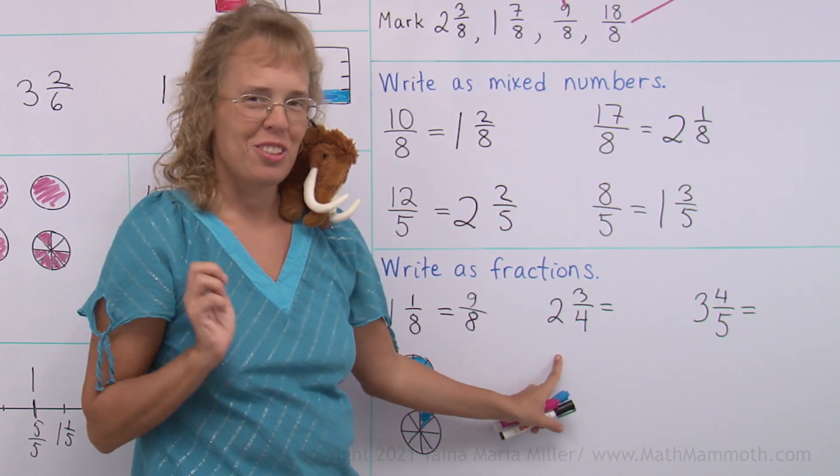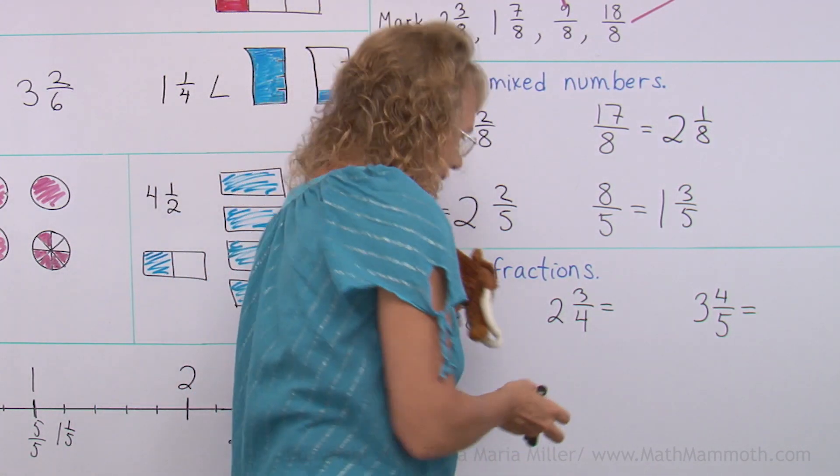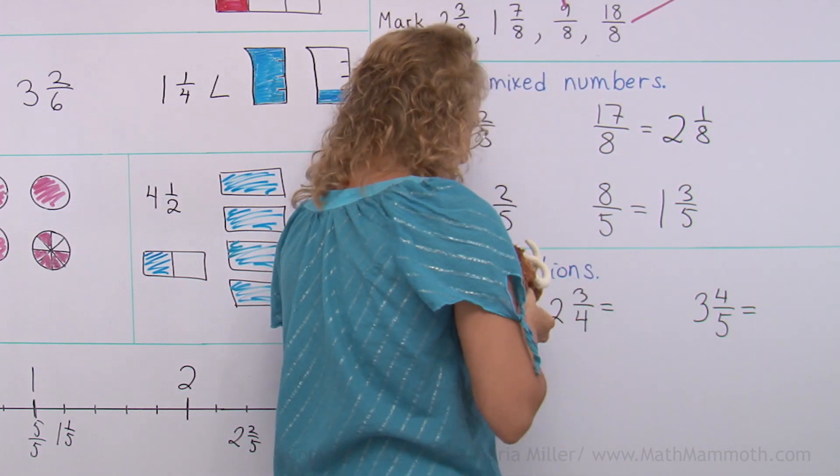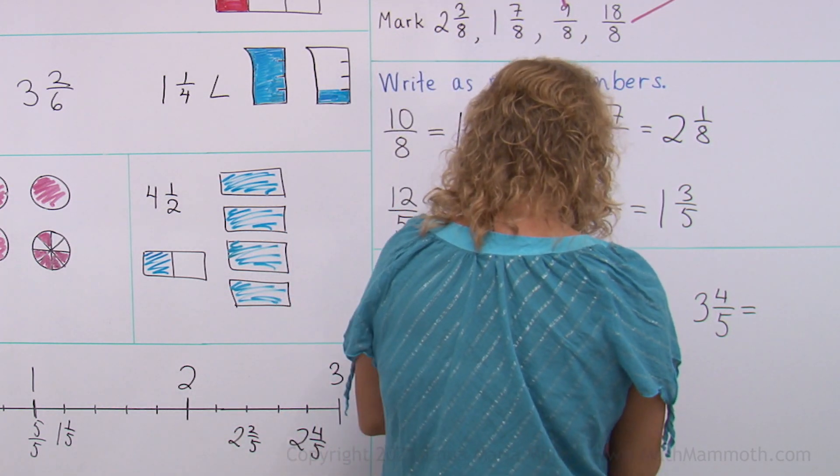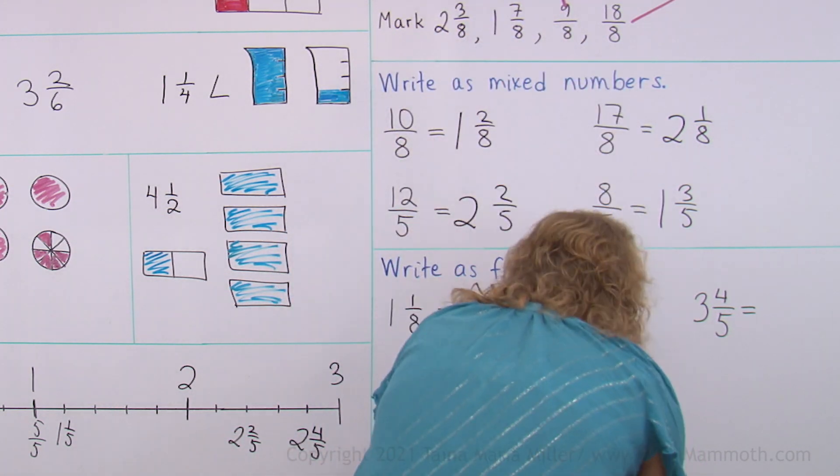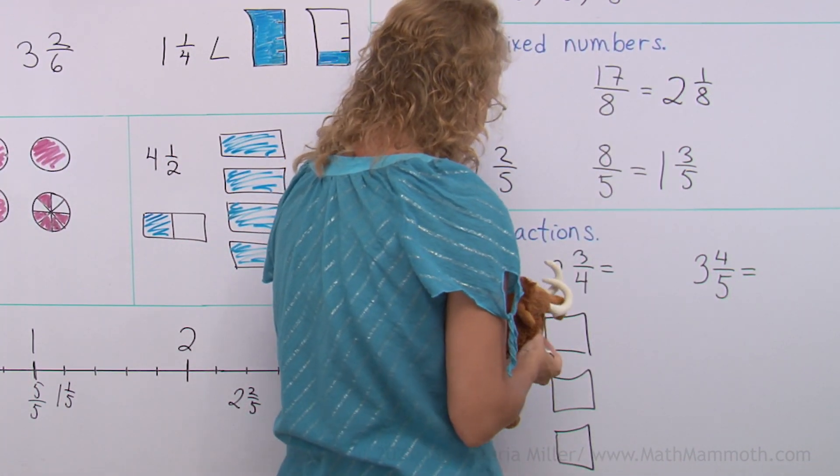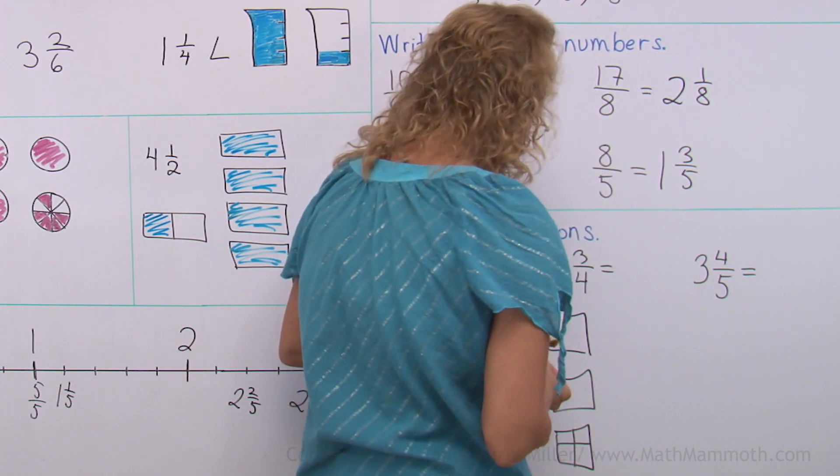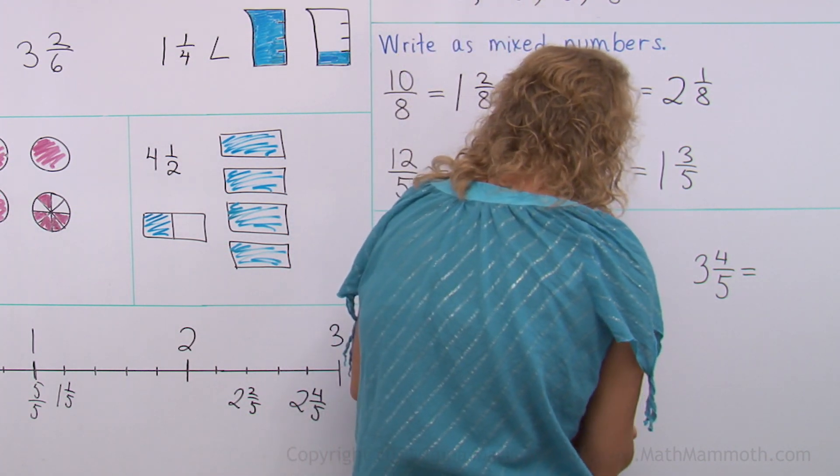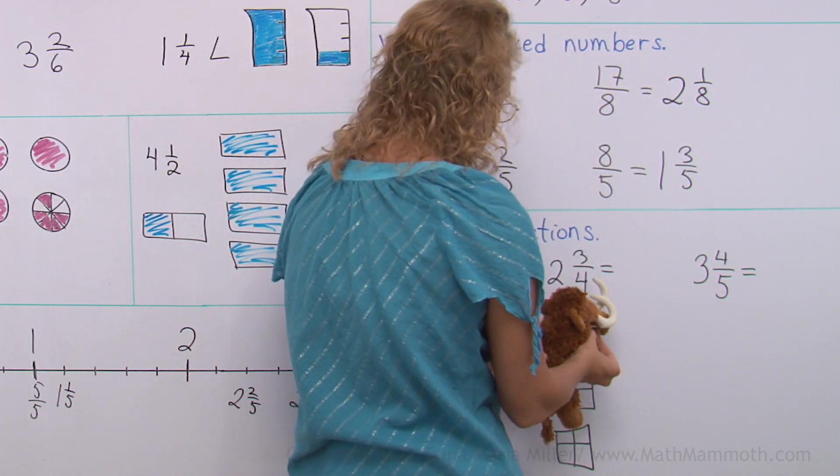2 and 3 fourths. We can use the same idea. Draw squares. 2. That's enough. 3 fourths. Let's divide this into fourths too. Everything into fourths.